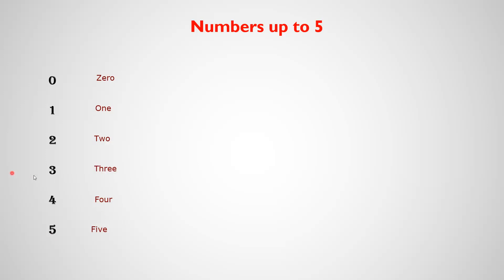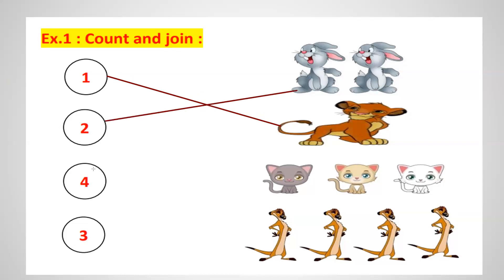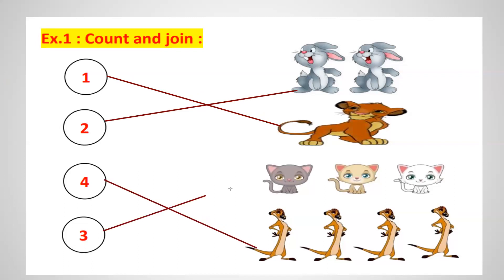Now let's solve some examples. Here, count and join — join means match. Here is number 1. Where can you see the 1? Yes, here it is. We have 1 lion, so we are going to match them together. What about number 2? Here it is — 2 rabbits. Then match number 4. And the 3 is here.